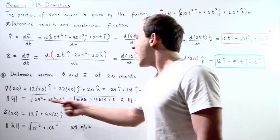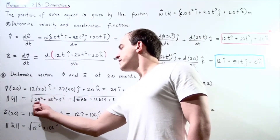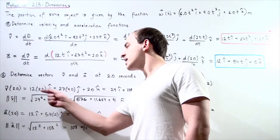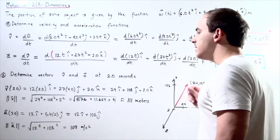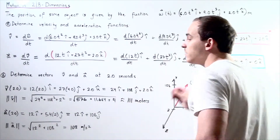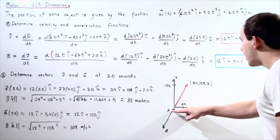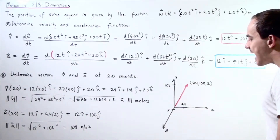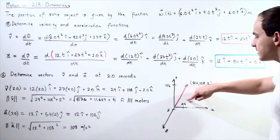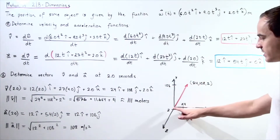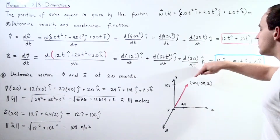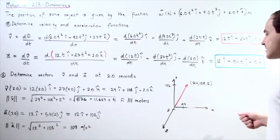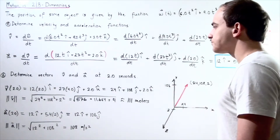To find the magnitude, I use the formula: take the square root of 24 squared plus 108 squared plus 2 squared, add them up, and I get approximately 111 meters per second as the magnitude of the velocity vector. For the direction, if I have my x, y, z axes with the z axis coming out of the board, the vector begins at the origin (0, 0, 0) and ends at the point (24, 108, 2) — where 24 is the distance along x, 108 along y, and 2 along z.